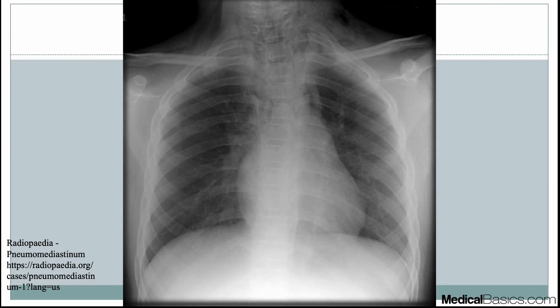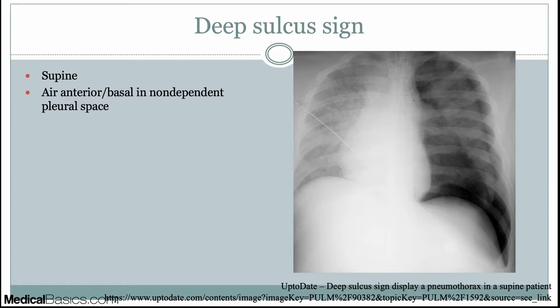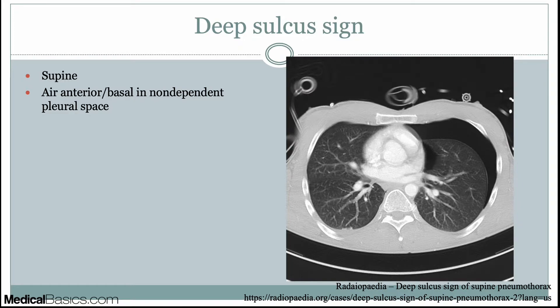This is called the deep sulcus sign — a very abnormal situation. When a patient is supine, air doesn't necessarily go to the apex; it goes in the most non-dependent direction, which when lying down is the anterior lower segment of the lung. On CT, since patients are supine with their back flat on the table, air goes anteriorly — that's why we see it up front, often in the lower lobe, where there's a deeper pocket for air to collect. On CT you just call it pneumothorax, not deep sulcus sign.